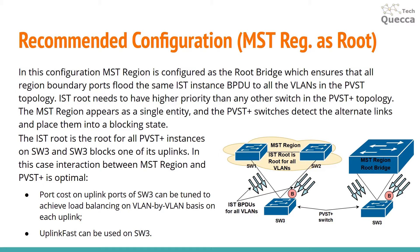The IST root is the root for all PVST+ instances on SW3, and SW3 blocks one of its uplinks. In our example we have our MST region consisting of two switches, and SW3 is PVST+. SW3 considers our MST region as a single entity — a single switch which is root bridge — and it blocks one of its uplinks. In this case, interaction between MST region and PVST+ is optimal. Port cost on uplink ports of SW3 can be tuned to achieve load balancing on a VLAN-by-VLAN basis on each uplink, and UplinkFast can be used as well on SW3.